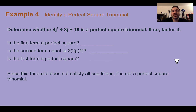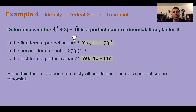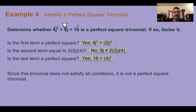Example 4: Identify a perfect square trinomial. Determine whether 4j squared plus 8j plus 16 is a perfect square trinomial. Is 4j squared a perfect square? Yes — 4 is a perfect square and j squared is j times j. Is 16 a perfect square? Yes — 16 is 4 times 4. In the middle, is 8j equal to 2 times 2j times 4 doubled? No — 8j equals 2j times 4, but that's not doubled. If this were a perfect square, the middle term would be 16j. So it is not a perfect square trinomial.